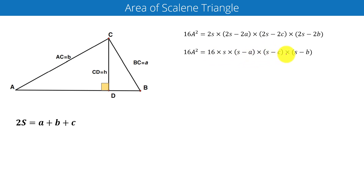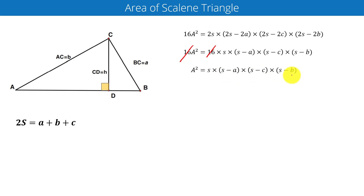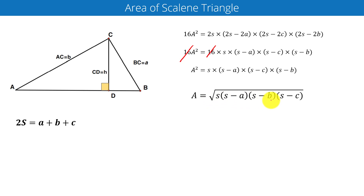Cancelling 16 from both sides, we get A squared equals s(s minus a)(s minus b)(s minus c). Rearranging, we get A equals the square root of s(s minus a)(s minus b)(s minus c). This is called Heron's formula to calculate the area of triangle ABC, where s is called the semi-perimeter and its value is given by (a plus b plus c) divided by 2.